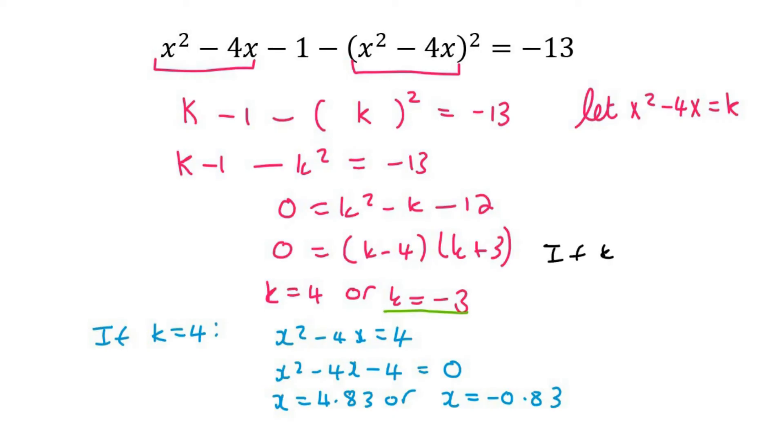And then I bring the -3 over. I can then factorize this, and so therefore x is 1 and x is 3. So look at that guys, it's pretty cool. We've got four answers: 1, 2, 3, and 4.